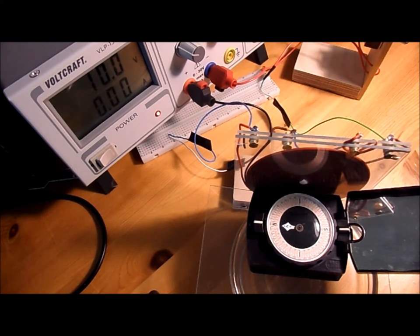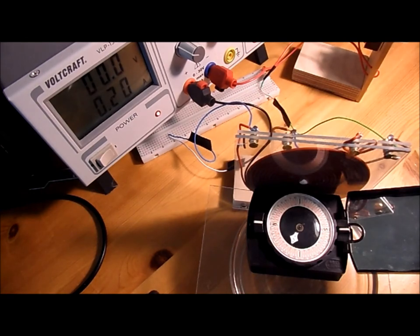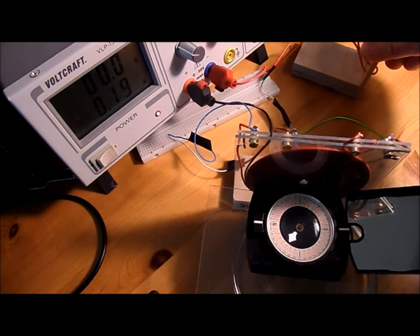I have now set up my bfiller pancake coil and the power supply is still set to a 200mA output. I switch on and we see the compass is deviated quite far. Let me do it once more.